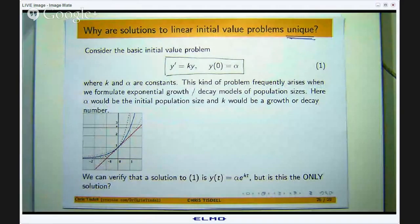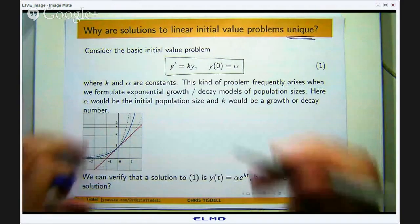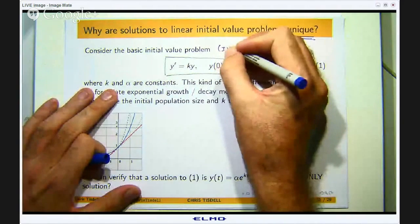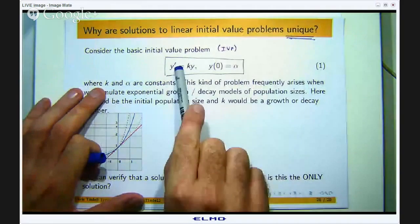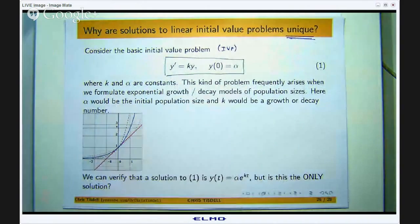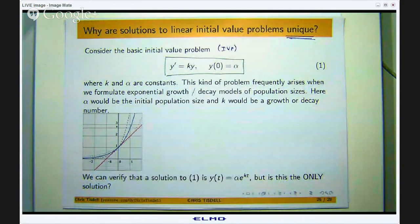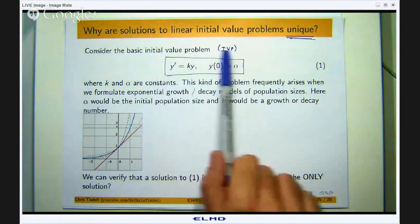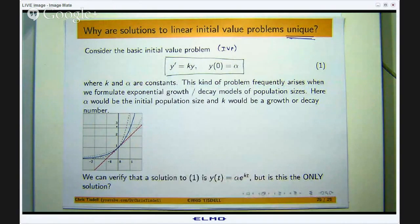Okay, so suppose I have got a basic initial value problem or IVP. Here the dash means the derivative, so y' would mean dy/dt. k and α are constants and this is the sort of basic problem you see in a first course in calculus or differential equations.